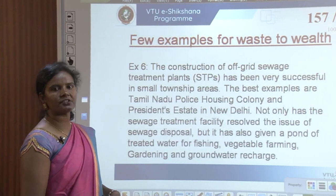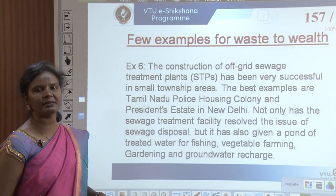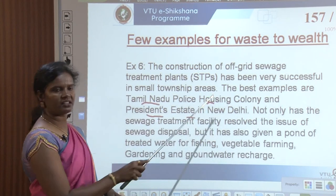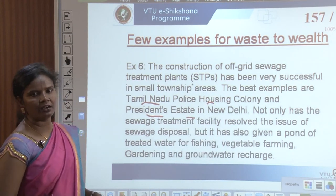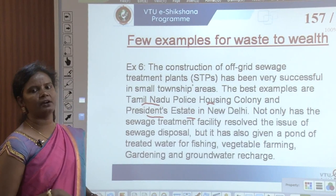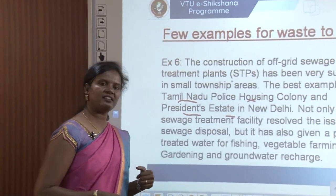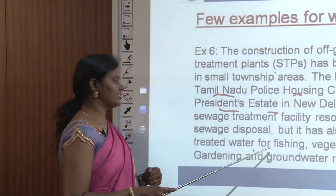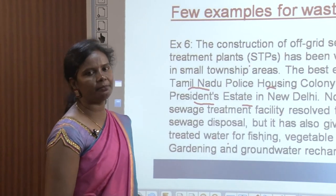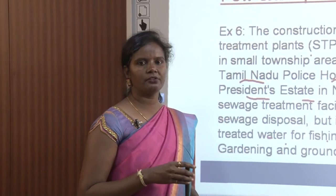The last example is the construction of off-grade sewage treatment plants (STPs), which has been very successful in small township areas. The best examples are Tamil Nadu Police Housing Colony and the President's Estate in New Delhi. This sewage treatment facility resolves sewage disposal issues and also provides treated water for fishing, vegetable farming, gardening, and groundwater recharge. These are a few examples of how waste can be utilized to create wealth. In the next session, we will look into different types of waste in more detail.